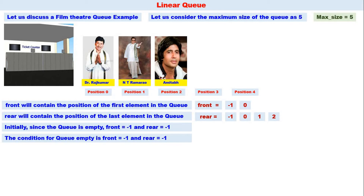Another superstar comes to the queue. We increment rear, so rear becomes three. That is Rajnikan sir — Thalaiva, style king, superstar of the Tamil film industry. Dr. Rajkumar is still the first person in the queue and Rajnikan sir is the last person. Therefore, front equals zero and rear equals three.